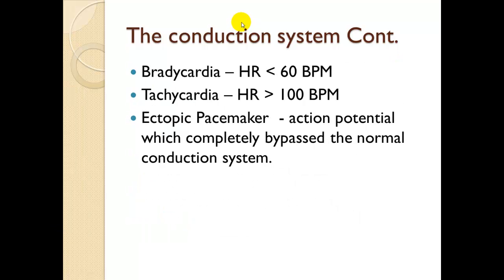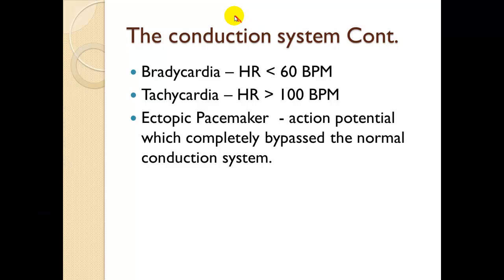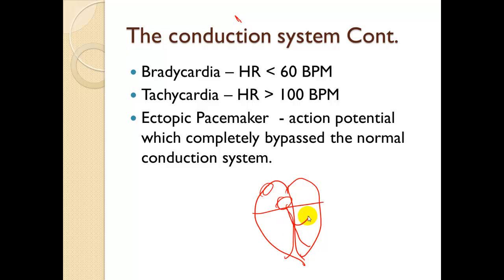If someone is bradycardic, their heart rate is below 60 beats per minute. Tachycardic means the heart rate is above 100 beats per minute. An ectopic pacemaker is an action potential that completely bypasses the normal conduction system. A premature ventricular complex, or PVC, is an ectopic pacemaker site — it initiates in the ventricular muscle rather than the normal conduction pathway.